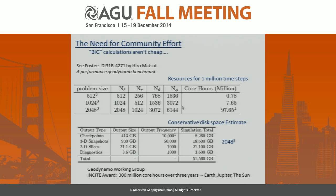While it's very nice to have these tools, it's also a good idea to work together to figure out the most efficient serial algorithms. For that, I'd point you to Hiramatsui's poster where multiple codes contribute to an effort looking at timings of individual pieces of the computation. It's also worthwhile to think about collaborating on computing proposals — the working group just successfully got time on Insight, about 300 million hours spread over three years, to look at Earth, Jupiter, and the Sun.